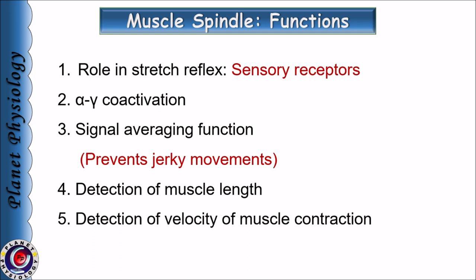Now let us study the functions of muscle spindle. The first function is that it acts as a sensory receptor in the stretch reflex. Second, it plays an important role in alpha-gamma coactivation, which we will see in the next slide in detail. The third important function is the damping function or signal averaging function — here the muscle spindle helps in smooth progression of movement by preventing oscillations, with primary afferents playing an important role in preventing oscillations.